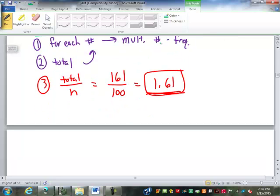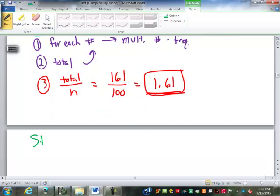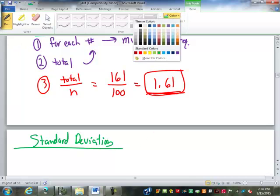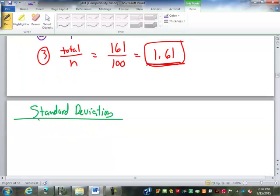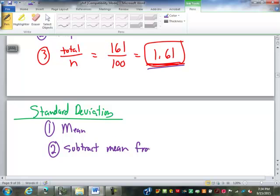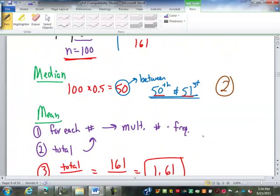So now we're going to look at finding the standard deviation. Now, as always, the first step in finding the standard deviation is to find the mean. We just did that. 1.61. The second step just like before, we're going to subtract the mean from each value, from each number.